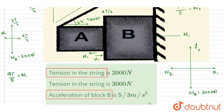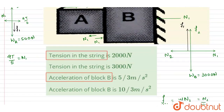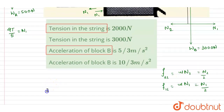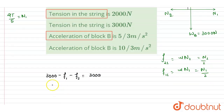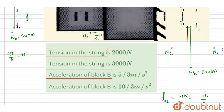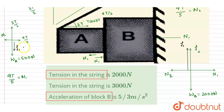Block B has a tendency to move downward because only the weight force acts downward. So friction F1 acts upward on B, and as a reaction, A experiences F1 in the downward direction. Writing the vertical force equation for B: 300A in the vertical downward direction. For A, weight 500 N and F1 act downward while the tension force acts upward.